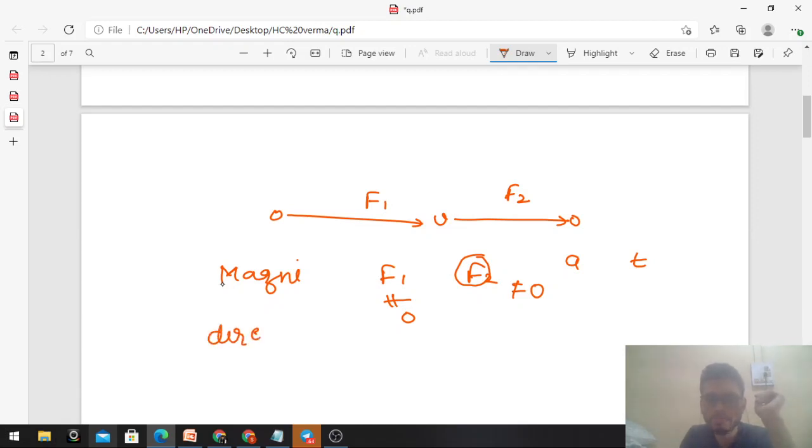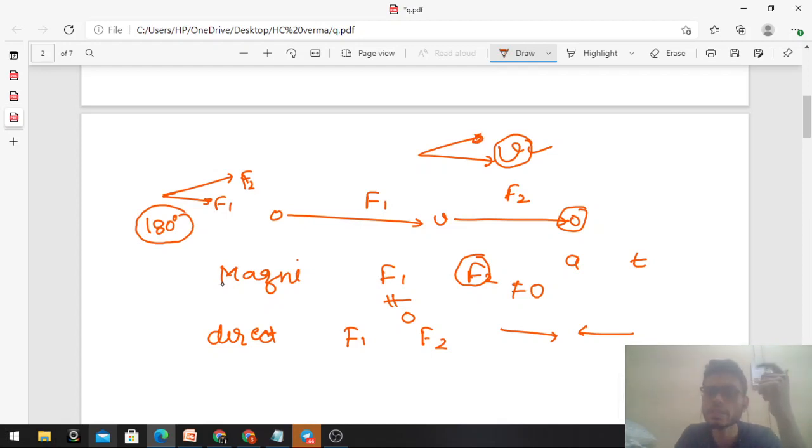But direction ke baare mein aap ek cheez keh sakta ho ki F1 or F2 ka jo direction hai wo hamesha opposite hona chahiye. F1 or F2 ka direction kabhi same nahi ho sakta hai. In fact ek hi possible case hai jab F1 or F2 opposite direction ho. Agar unke beech koi bhi angle aagya except 180 degree - only acceptable angle between F1 and F2 is 180 degrees. Uske alawa koi bhi angle agar aata hai, right, F1 or F2 ke beech mein to acceptable nahi hai, kyunki finally aapko velocity again zero lana hai. Agar aapki velocity is something is direction mein, so only force that can make this velocity zero is the force which is directly opposite to the direction of velocity, right? Agar aap kisi bhi aur direction mein force laga honge to velocity decrease ho sakti hai but zero kabhi nahi hogi.